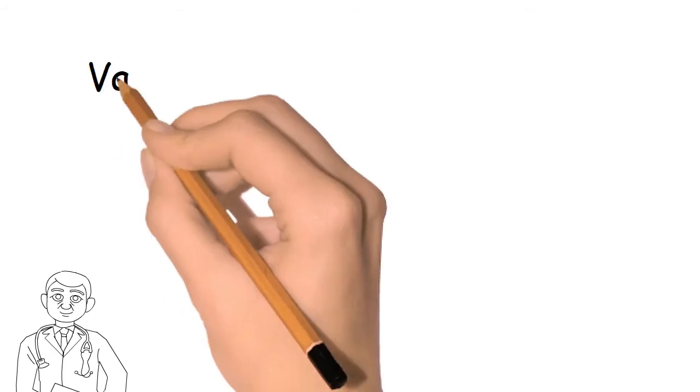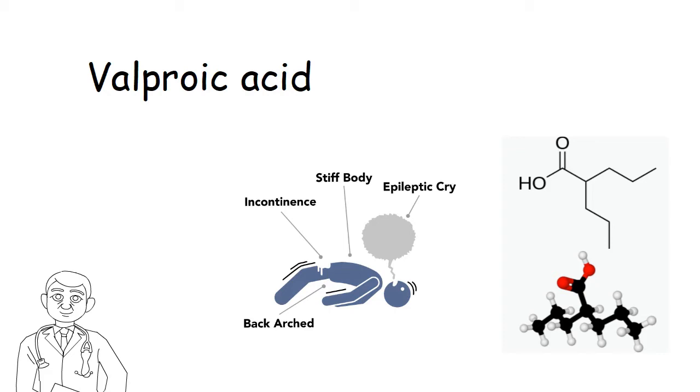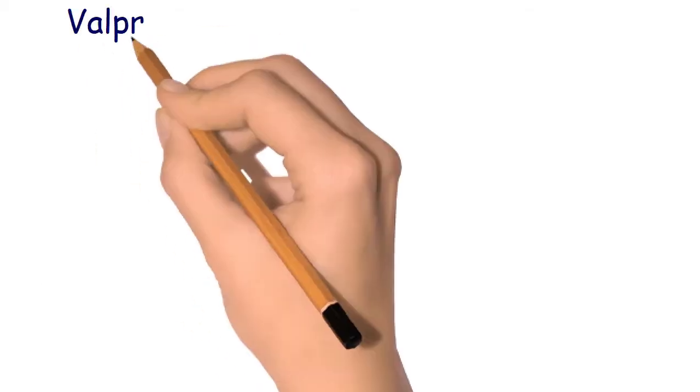Valproic acid is a branched-chain aliphatic carboxylic acid with broad-spectrum anticonvulsant action. It was first made in 1881 and came into medical use in 1962. It's used for various convulsive disorders, and valproate appears to act by multiple mechanisms of action.